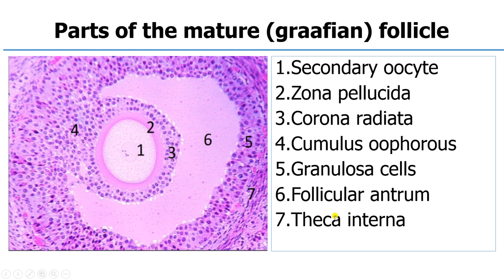The last structure is the theca interna. This layer of cells is very important because this is where endocrine functions occur. Outside the theca interna is the theca externa, which produces androgens. The theca interna contains an enzyme known as aromatase, which converts androgens into estrogens. It is the high levels of estradiol that determine which follicle will undergo ovulation.